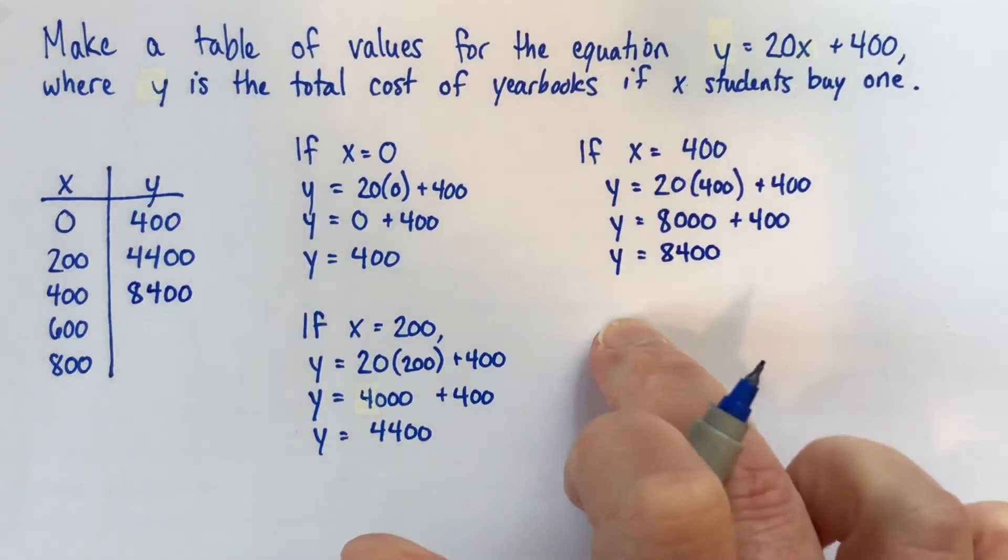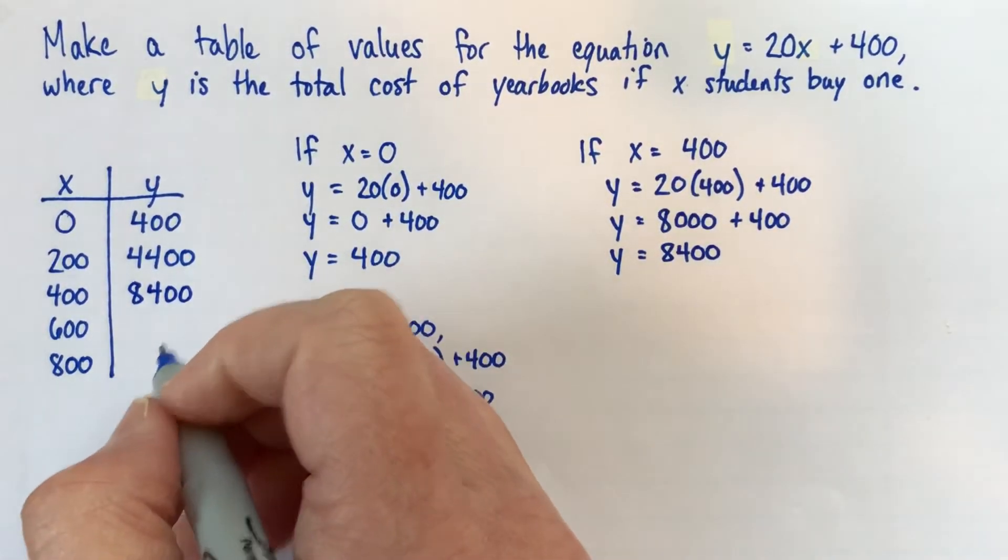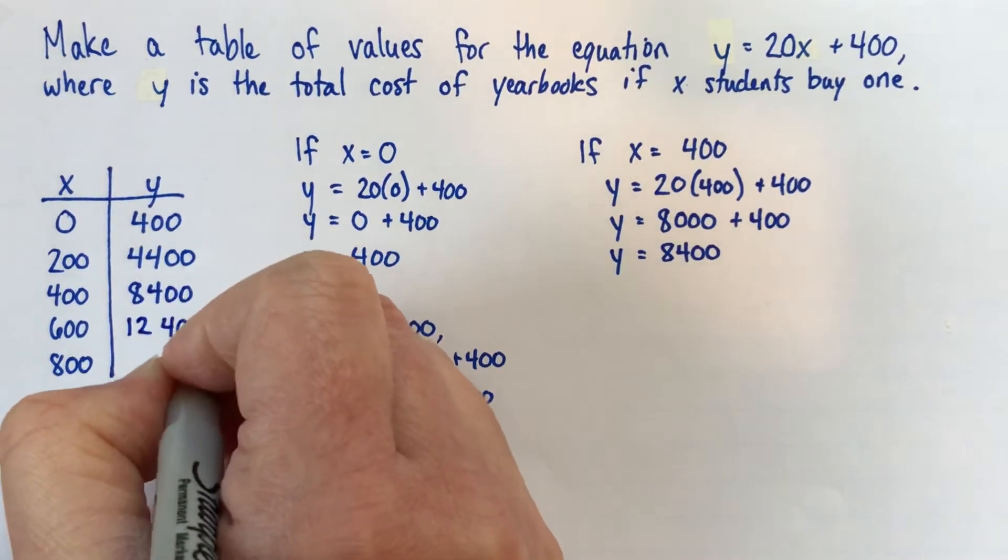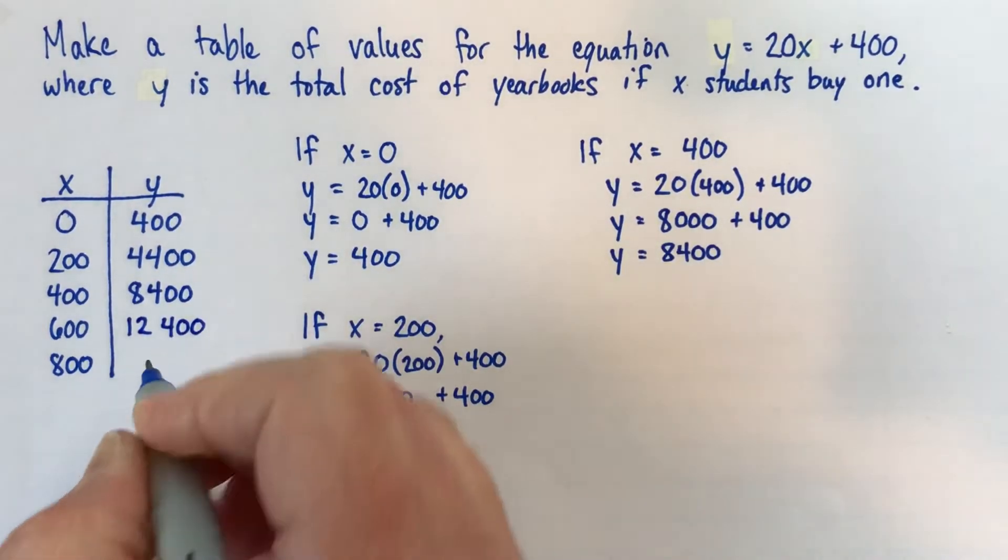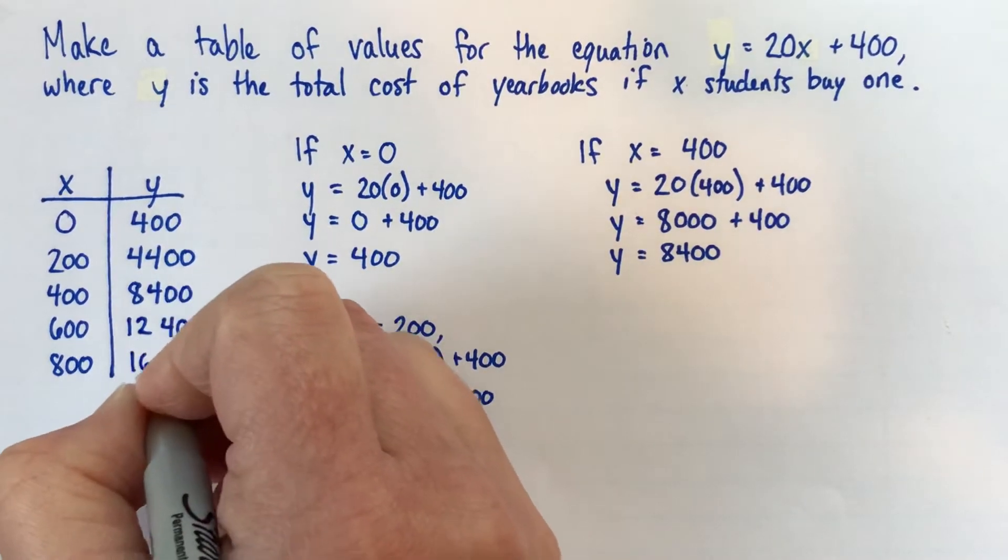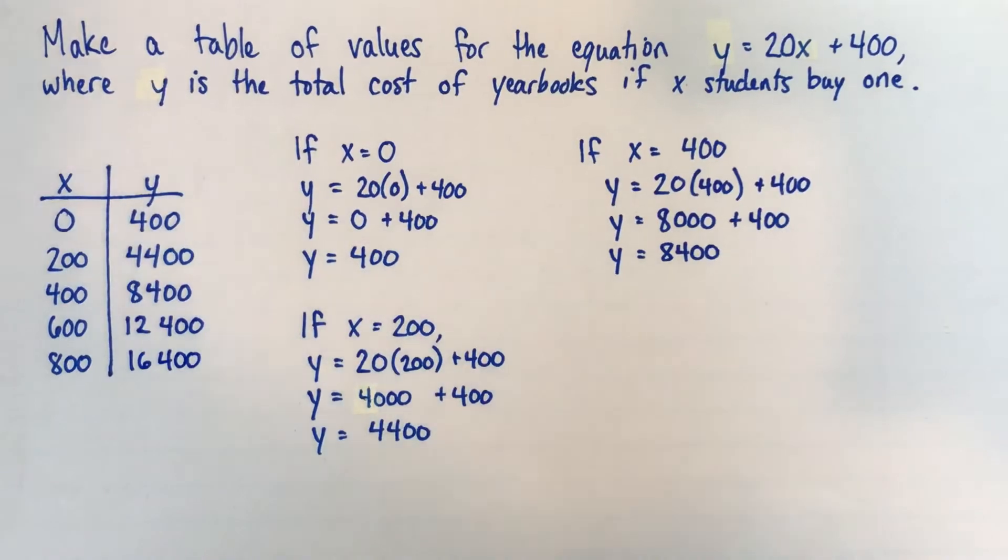All right, so it's probably very good practice for you to do the next two calculations, but for the sake of this video, why don't you trust me that this one is 12,400, and if we have 800 students buying yearbooks, it's 16,400. So there we go, we've got a table of values.